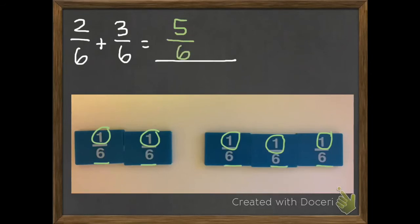Notice that we only add the numerators. We don't add the denominators. We just keep that part the same, because that's what we're adding. We're adding sixths, and we have five of them.